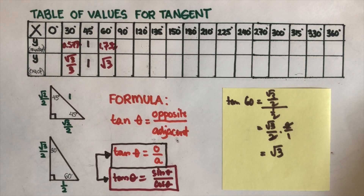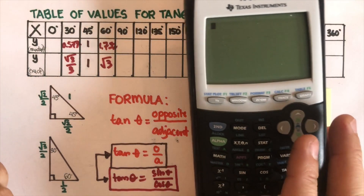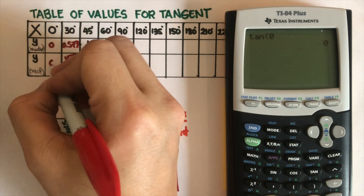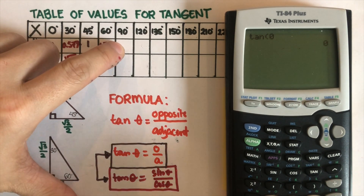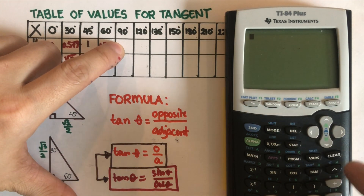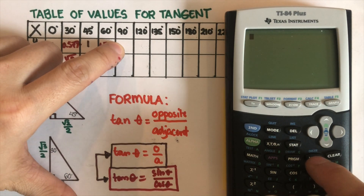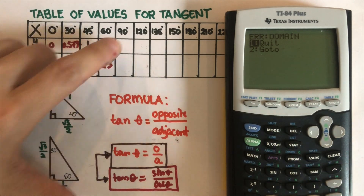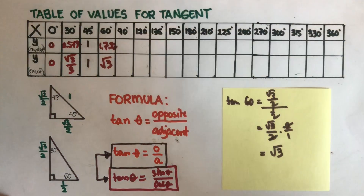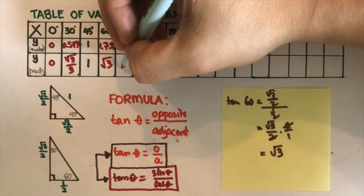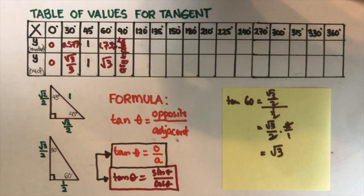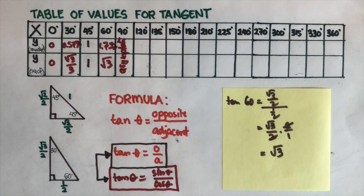So let's go back to zero. We're going to use the calculator: tangent zero is zero. So that's a zero right there. Then we have 90 — tangent 90 is an error. What do we mean by an error? An error means there is an asymptote. So there is an asymptote at 90 degrees.